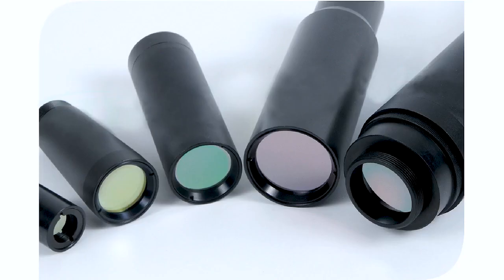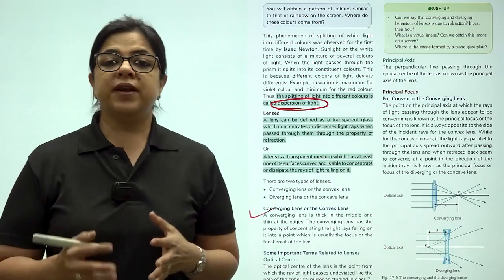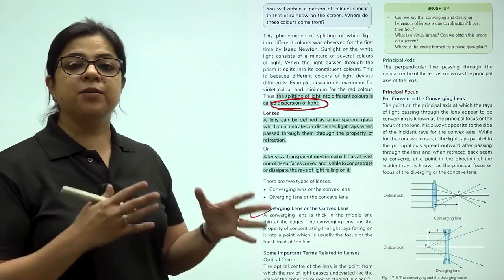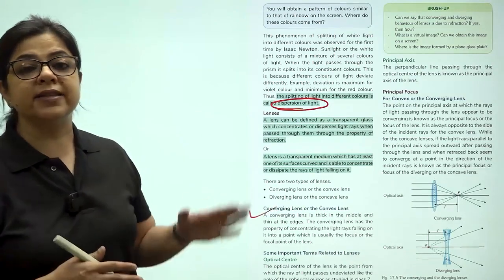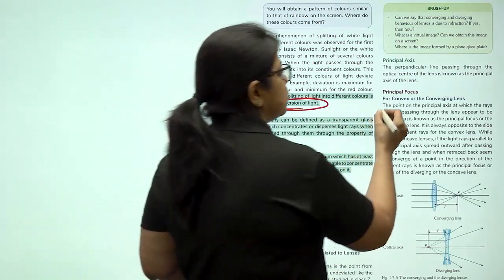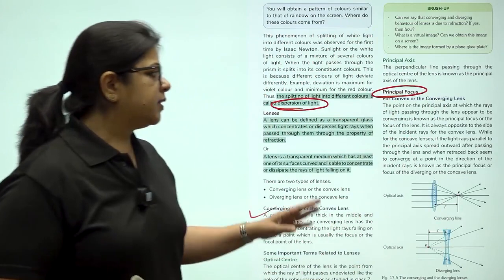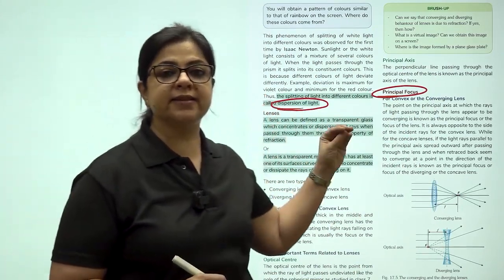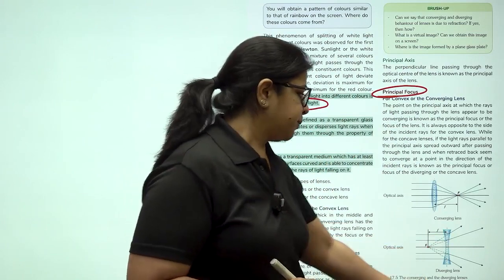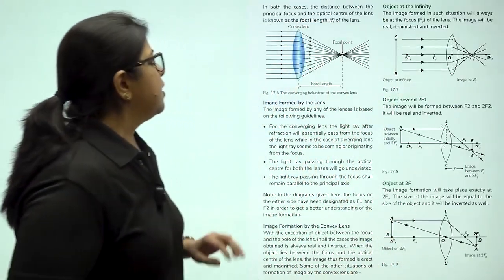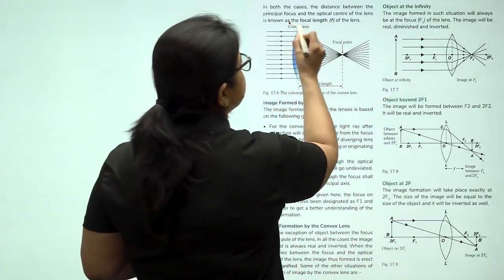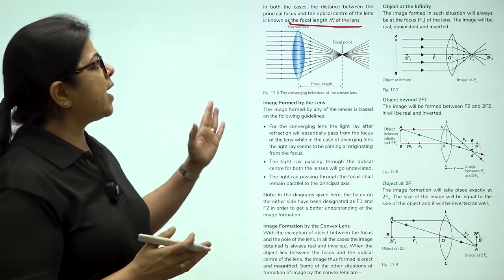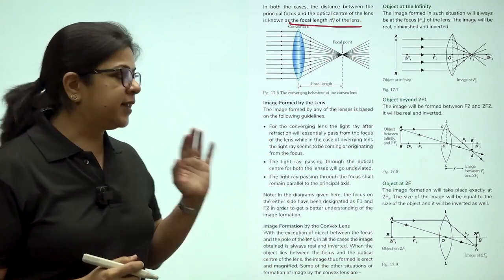When we are talking about reflection of light or refraction of light, in both cases we need to understand some basic terms. What is the principal focus? The principal focus is the point where the incident rays fall. Then, we also have to understand what is the focal length. It is a distance between the principal focus and the optical center of the lens.